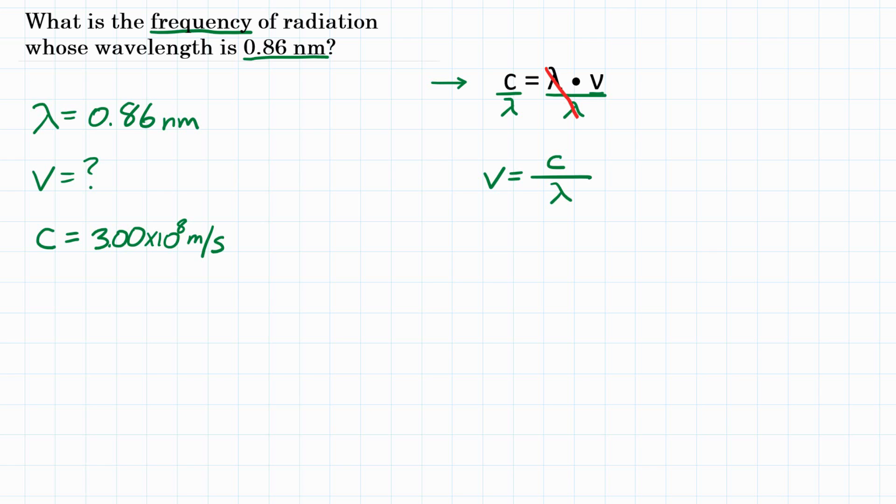So let's start plugging in our values so we can solve. So frequency equals the speed of light is 3.00 times 10 to the eighth meters per second divided by wavelength, which we have as 0.86 nanometers.